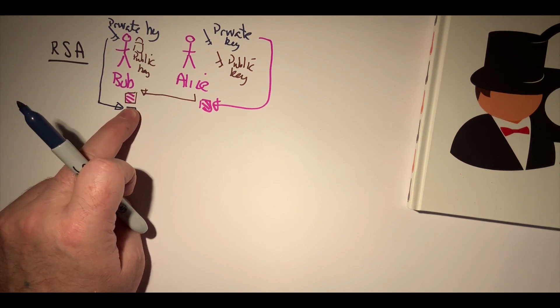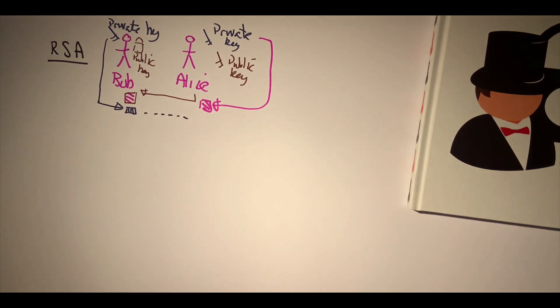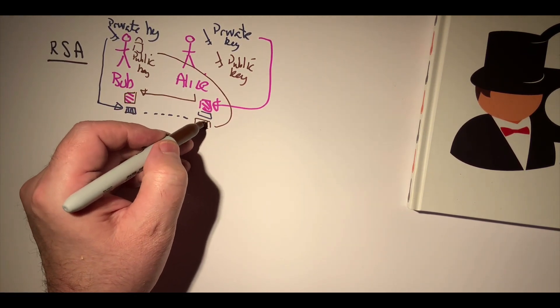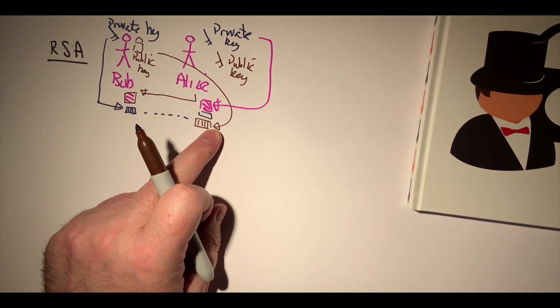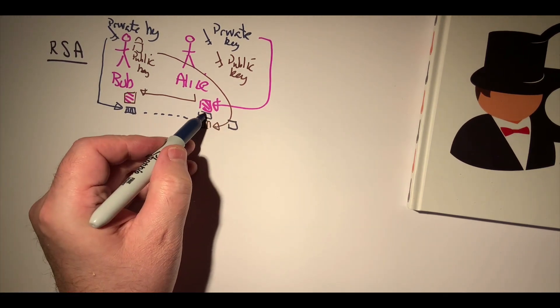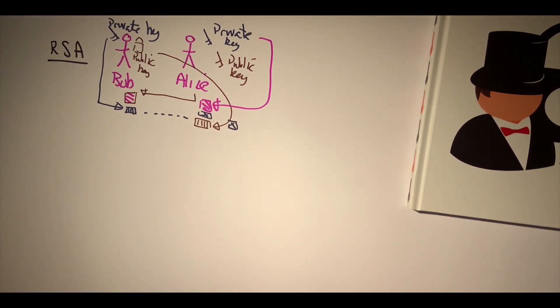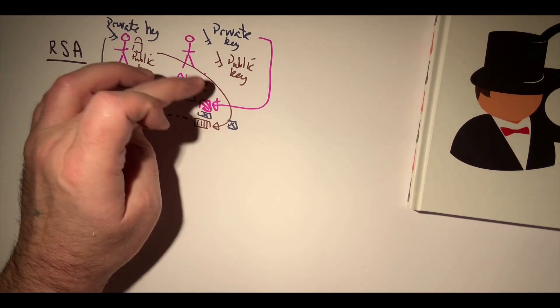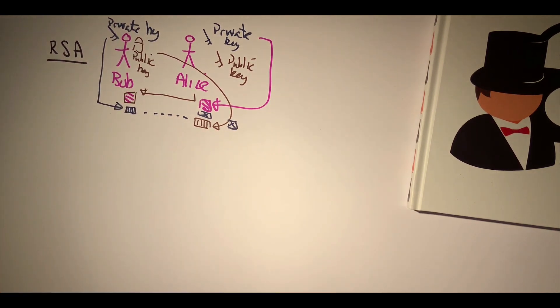When Alice receives that, she will also take a hash of the message, and then she'll be able to decrypt the hash with Bob's public key. This will then give the result of the hash as she has computed for the message. In this way we can prove it was Bob who signed the message and also that it hasn't been changed.